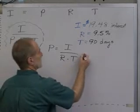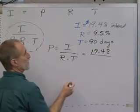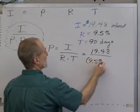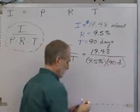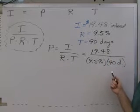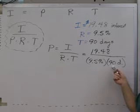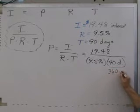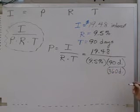Now let's plug in our numbers. The interest is $19.48 on top. The rate is 9.5% on the bottom. And the time is 90 days. Now we're going to have to really be careful. First of all, whenever we see time that's not in years, we're going to have to divide it by something. Either 12 if it's in months or 360 if it's in days. We always assume ordinary interest.